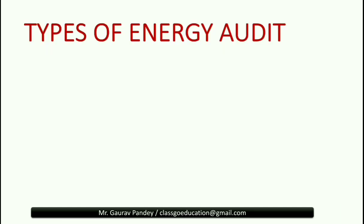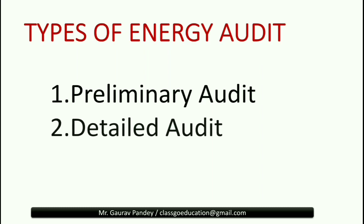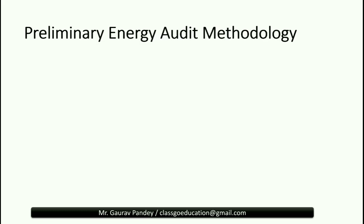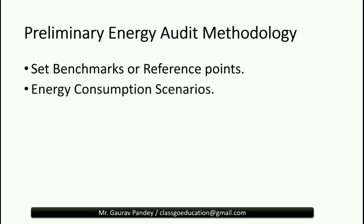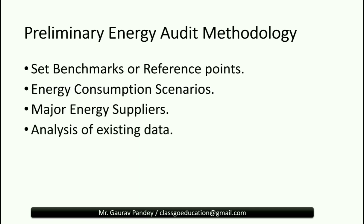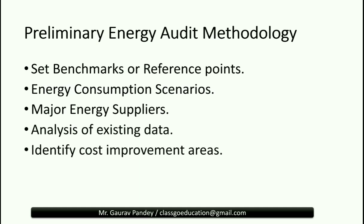What are the different types of energy audit? The first one is the preliminary audit and the second one is the detailed audit. In a preliminary audit, we basically set benchmarks or reference points, identify energy consumption scenarios, identify major energy suppliers, analyze existing data, identify cost improvement areas, and estimate the scope for savings.